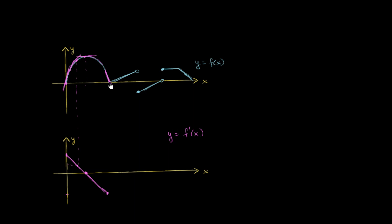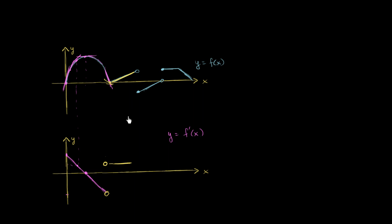Now let's think about as we get to this point. Here the slope seems constant — a constant positive value. So our derivative here is a constant positive line. But at this little pointy point, our slope won't really be defined because you could draw multiple tangent lines at that point. So let me just draw a circle there. But then as we get right over here, the slope seems to be positive, though not as positive as it was before. The slope is a constant positive this entire time — we have a line with a constant positive slope.